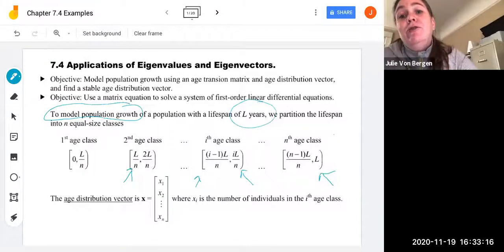So the age distribution vector is x1 through xn where each xi is the number of individuals in the ith age class.